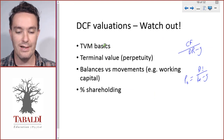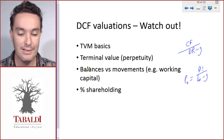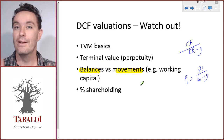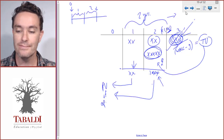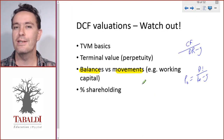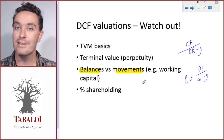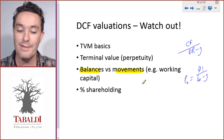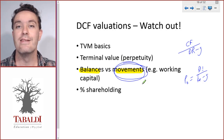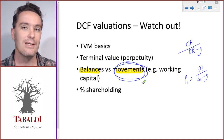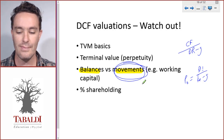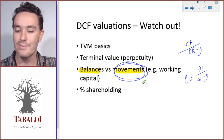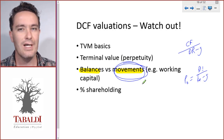The next thing to watch out for is balances versus movements. We want operating cash flows in each year. When dealing with working capital, don't take just the balance. If they say working capital is 10% of next year's sales, calculate the balance at the start and end of the year — the difference is the movement, and that is your cash flow. An increase in working capital is a decrease in cash flow because cash gets tied up in working capital.